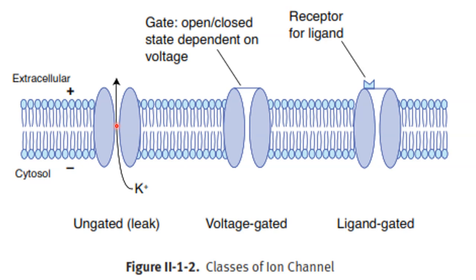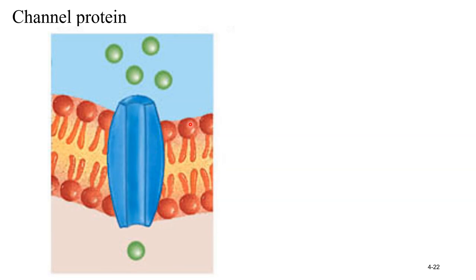You have to differentiate between channel protein and carrier protein. A channel protein makes a gap — like a bridge, many molecules can go at a time. A carrier is like a turnstile gate — one person can go at a time, it is a slow process. When something passes through the channel, it is simple diffusion. The carrier protein is very specific, and it is a slow, rate-limiting process.